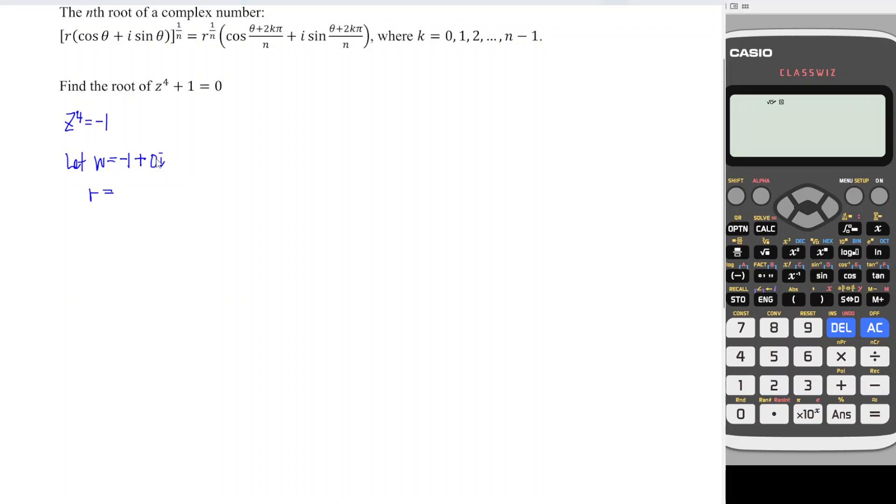0 indicates we don't have the imaginary part, which means that x is equal to negative 1 and y is equal to 0. r is equal to square root of x squared, which is negative 1 squared plus y squared. So which means that we should obtain equal to 1.